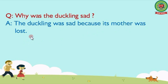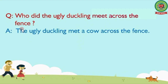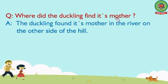Our next question is: who did the ugly duckling meet across the fence? The answer is: the ugly duckling met a cow across the fence. Our next question is: where did the duckling find its mother? The answer is: the duckling found its mother in the river on the other side of the hill.